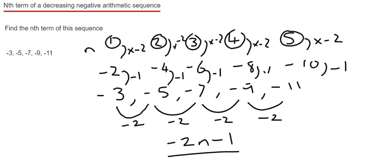So that is our final answer: minus 2n take away 1.